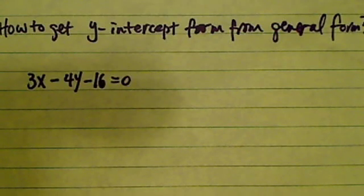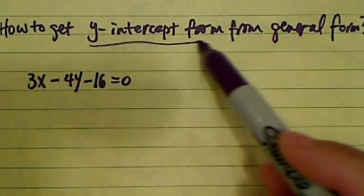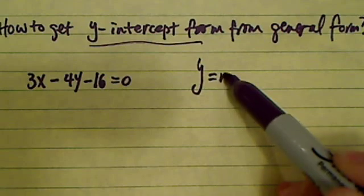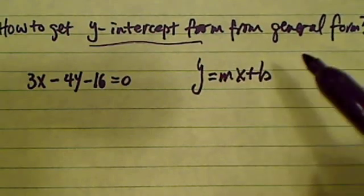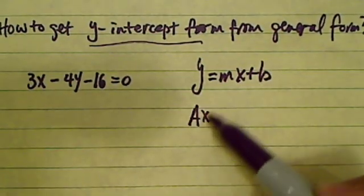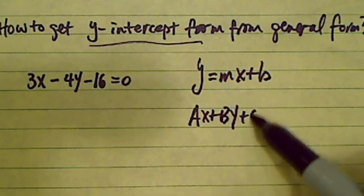How to get a y-intercept form from a general form? It doesn't look as bad as it actually sounds. An intercept form is really just y equals mx plus b. So a general form is Ax plus By plus C equals 0.